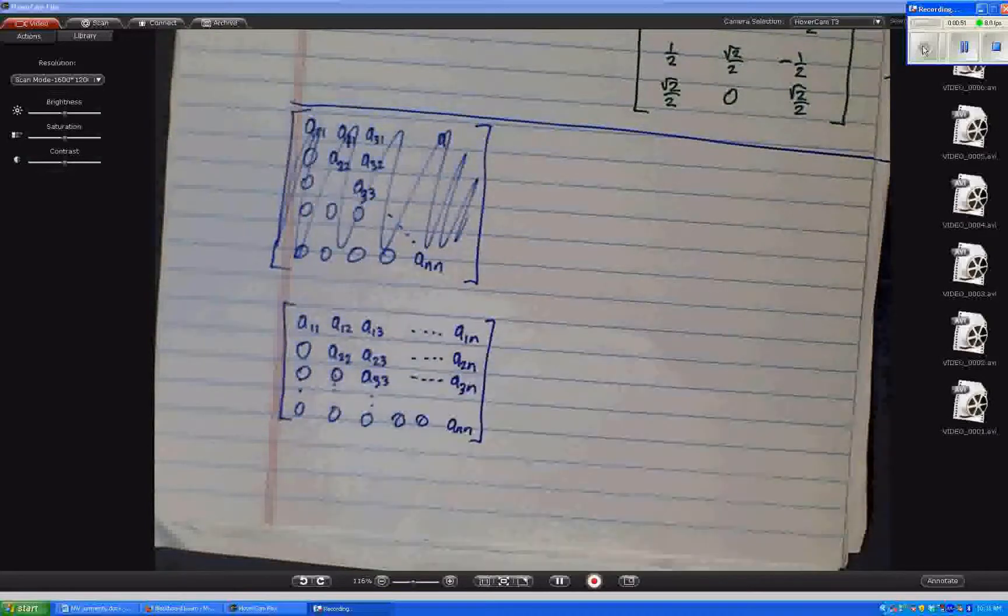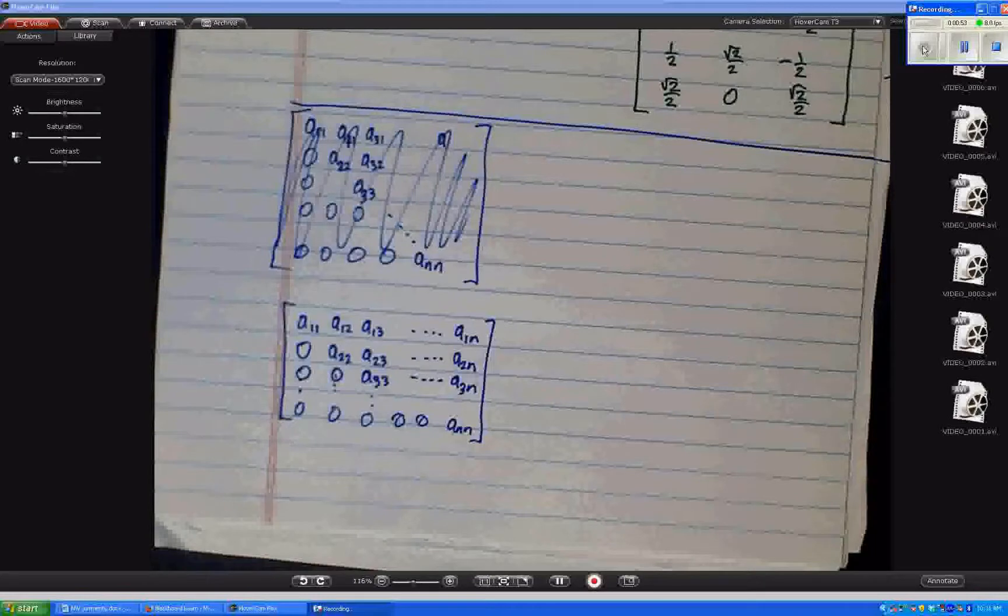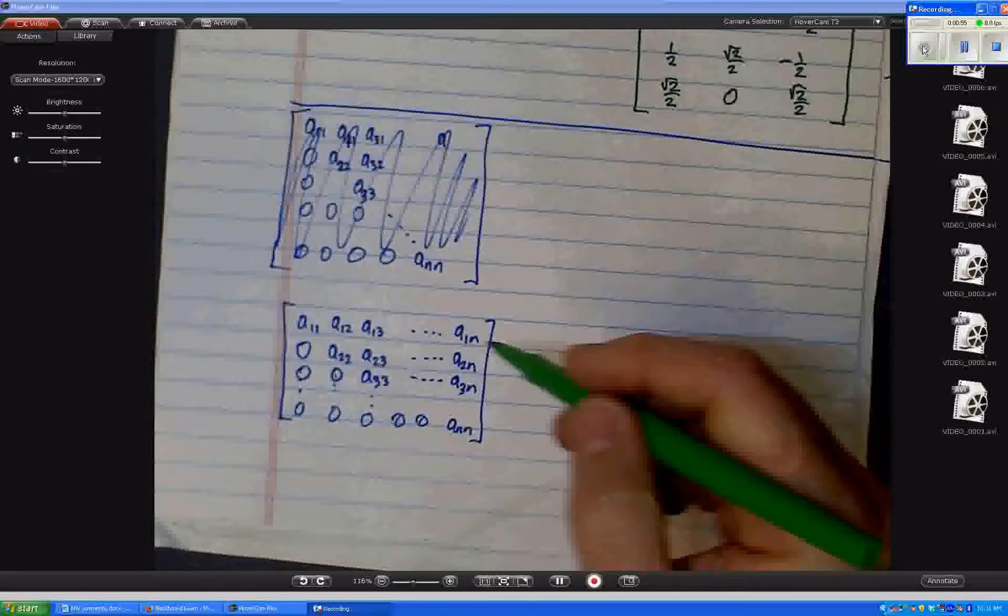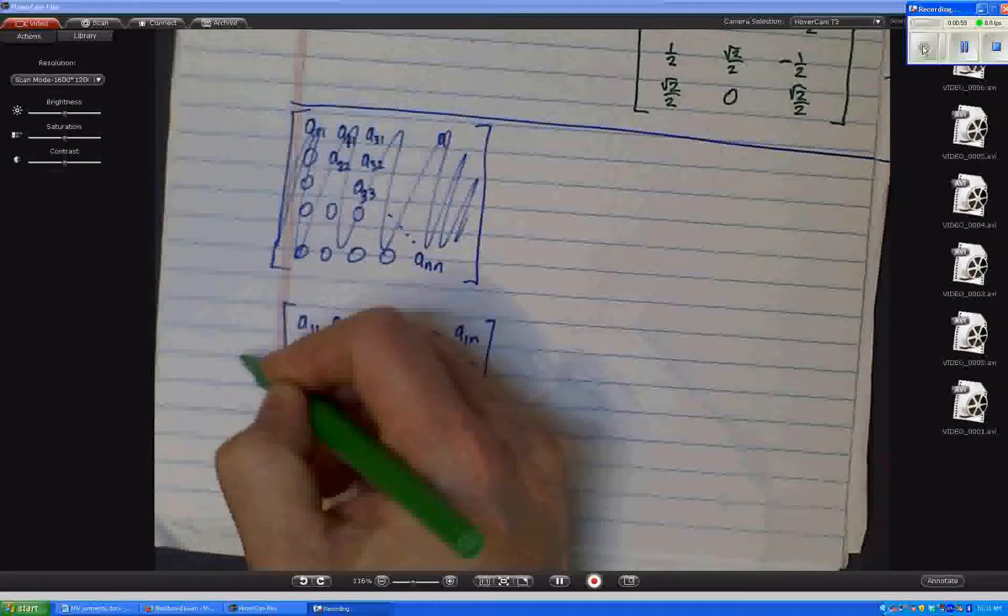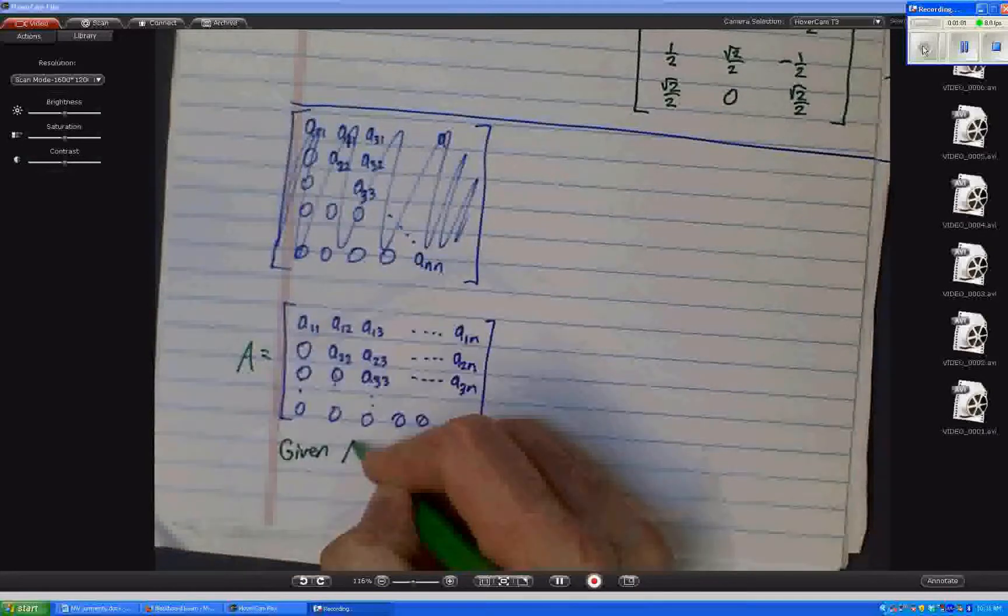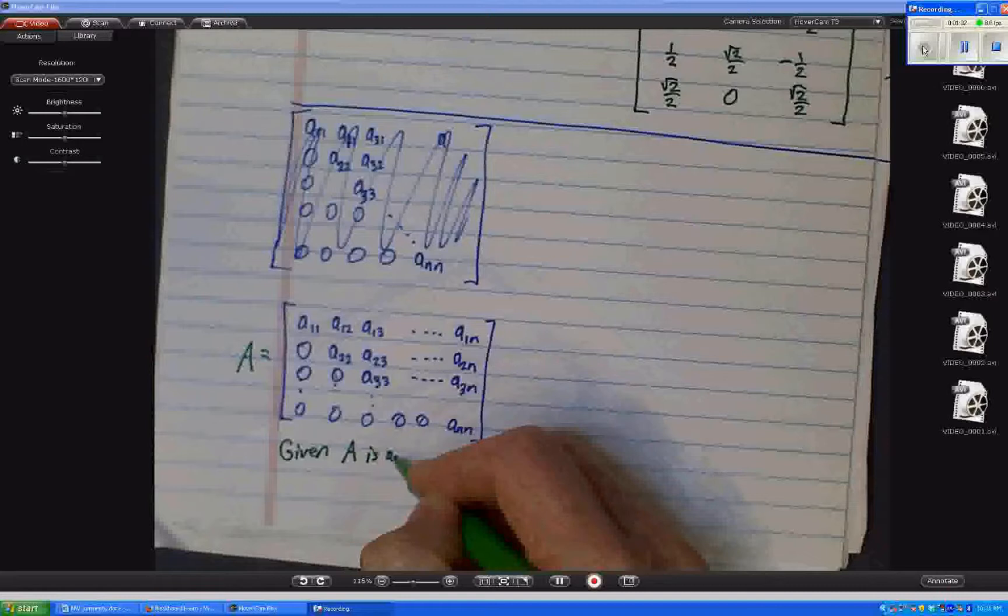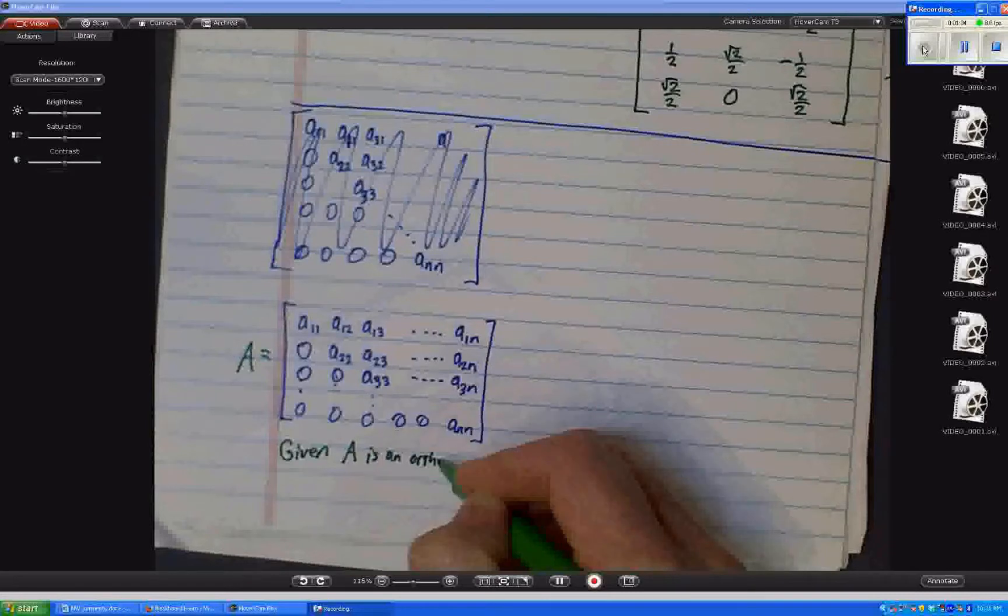So that's kind of a picture of the matrix. And so then there's two things going on. So we're given, if I call this matrix A, we're given that A is an orthogonal matrix.